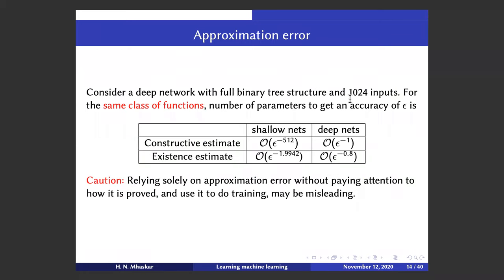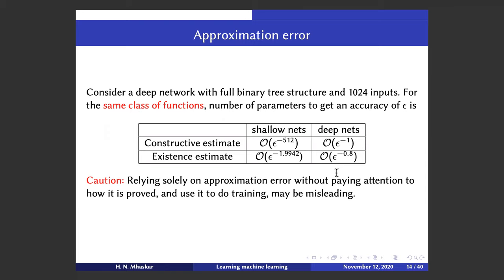For example, with a full binary tree structure with 1024 inputs, for the same class of functions, the number of parameters to get accuracy epsilon: using the constructive approximation estimate gives a very substantial improvement over shallow networks; using only the existence estimate still gives some improvement but not as substantial. The moral of the story is if we rely solely on the approximation error, even if we know the same prior on the class of functions, it can still be misleading.